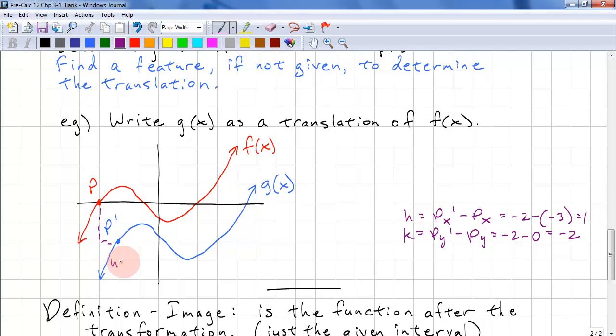We can verify this first. h equals 1, right. And k equals down 2. This matches the calculations. g of x equals f of x minus 1 minus 2.